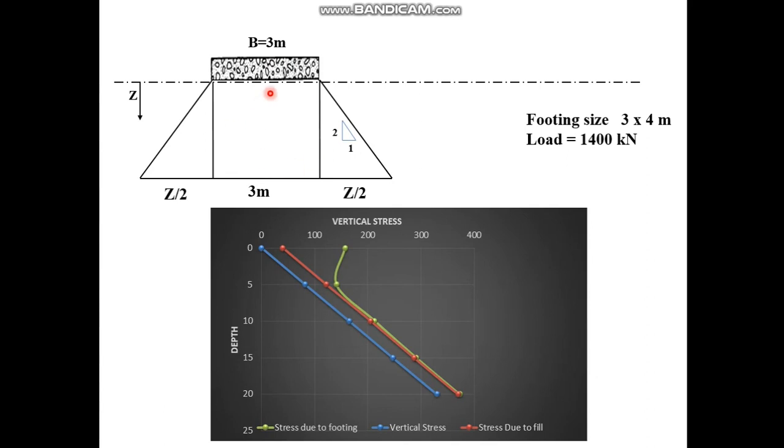This diagram represents the 2-to-1 method. This graph shows vertical stress due to the fill, effective vertical stress due to overburden, and stress due to the footing. The vertical stress due to overburden increases with depth.